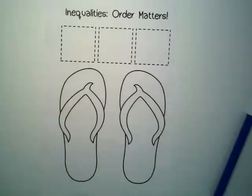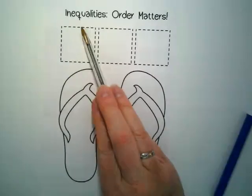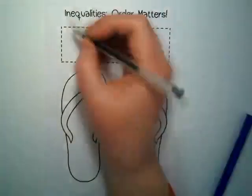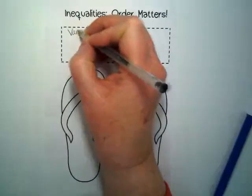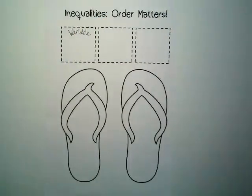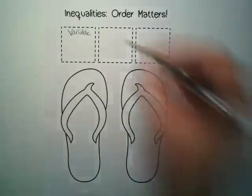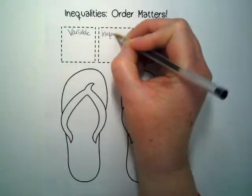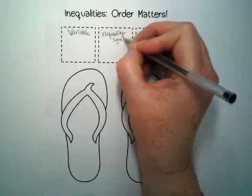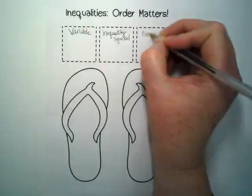As you can see from the top of my paper: Inequalities, Order Matters. You always want to have the variable on the left, with the inequality symbol in the middle, and the constant on the right.